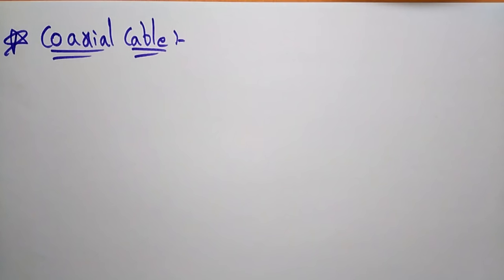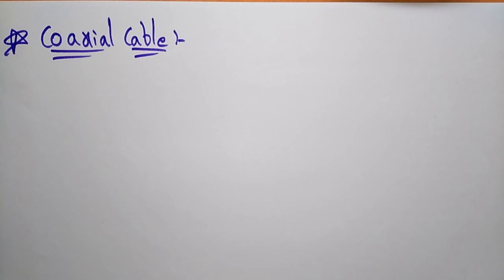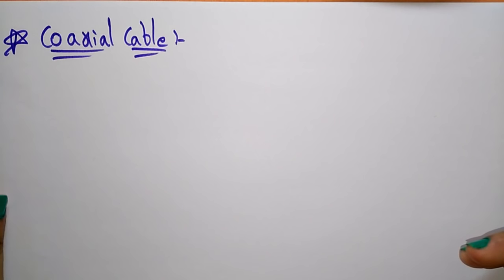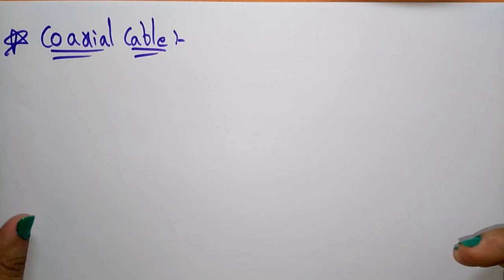Let us continue with the topic transmission media. The transmission media is of two types: guided and unguided. Guided is wired transmission media, whereas unguided is wireless transmission media. The guided transmission media is again of three types: twisted pair cable, coaxial cable, and fiber optics cable. In the previous video, I discussed the twisted pair cable.